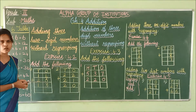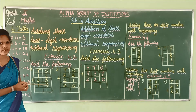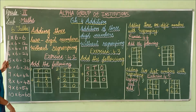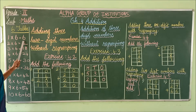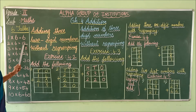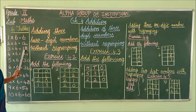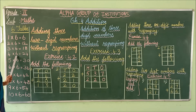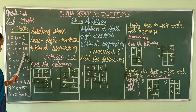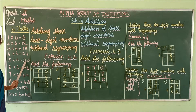Shall we recall for a second, children? See here. 1, 6 is 6. 2, 6 are 12. 3, 6 are 18. 4, 6 are 24. 5, 6 are 30.